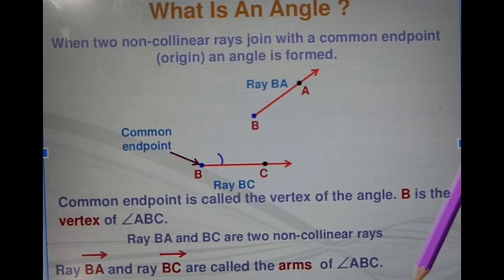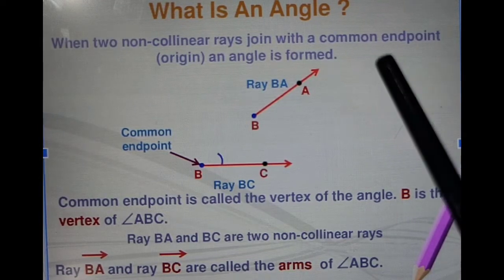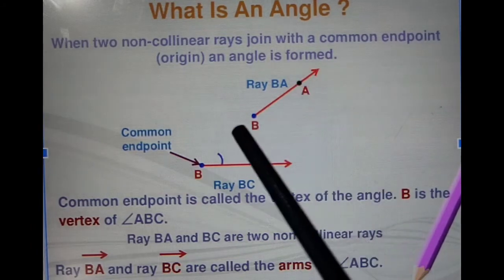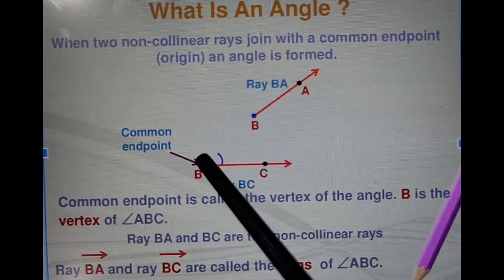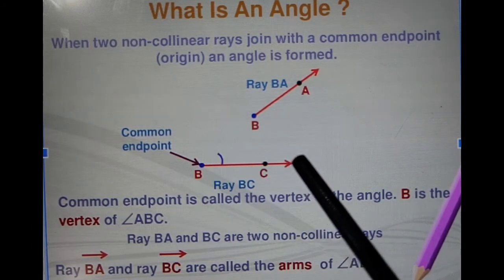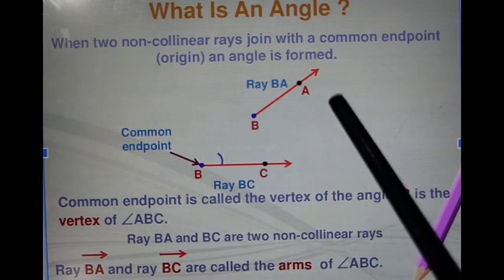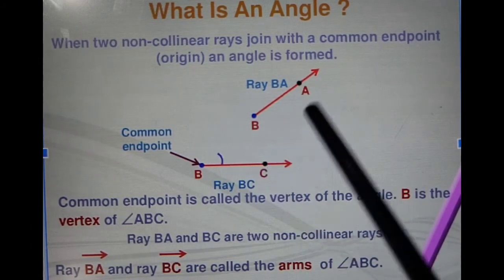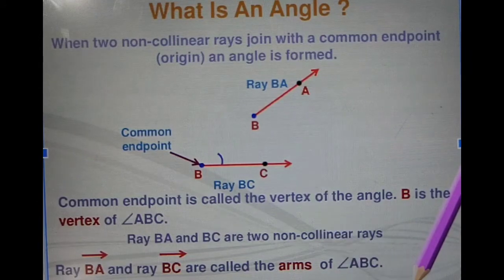Ray BA and BC are called the arms of the angle. The arms of angle ABC — when these two rays meet they form an angle, and these two rays are the arms of this angle.